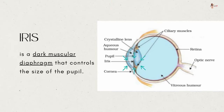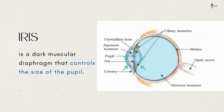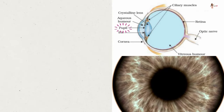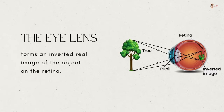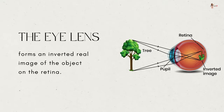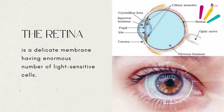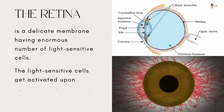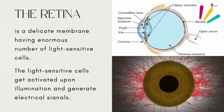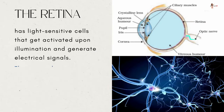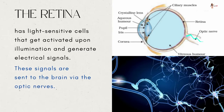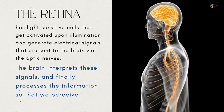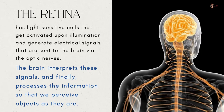We find a structure called the iris behind the cornea. The iris is a dark muscular diaphragm that controls the size of the pupil. The pupil regulates and controls the amount of light entering the eye. The lens forms an inverted real image of the object on the retina. The retina is a delicate membrane having an enormous number of light-sensitive cells. These cells get activated upon illumination and generate electrical signals, which are sent to the brain via the optic nerves. The brain interprets these signals and processes the information so that we perceive objects as they are.